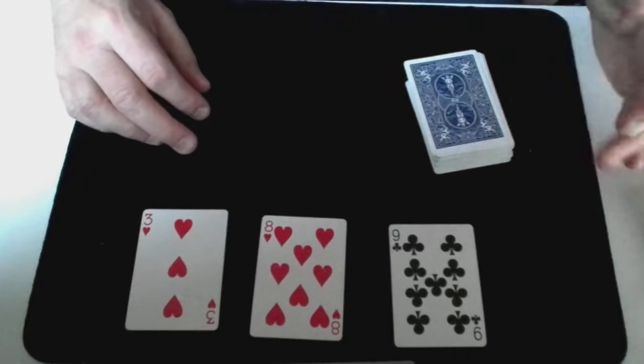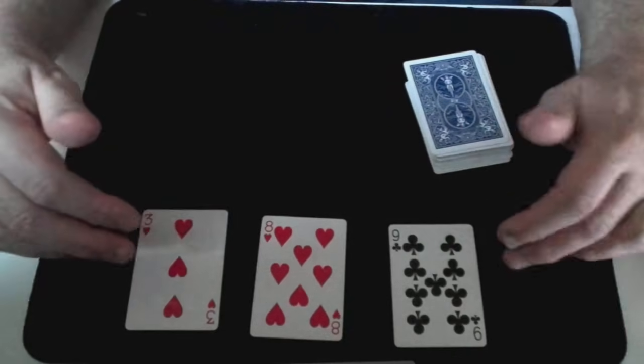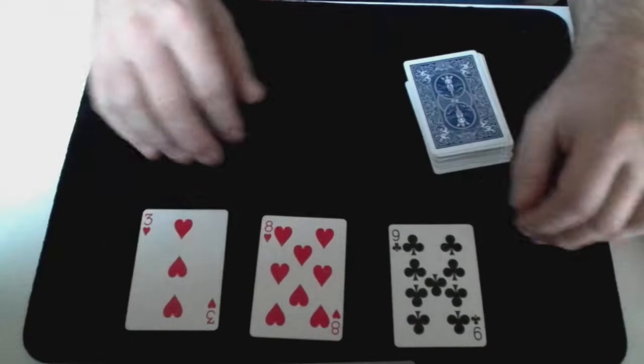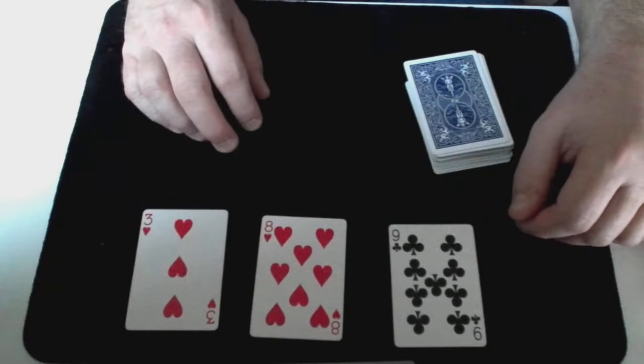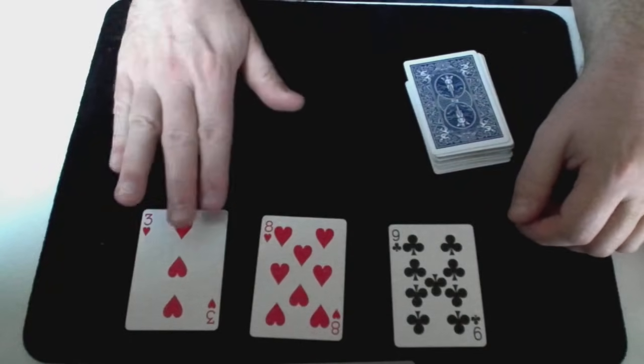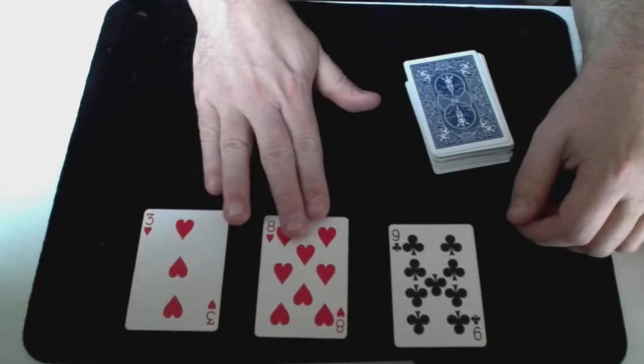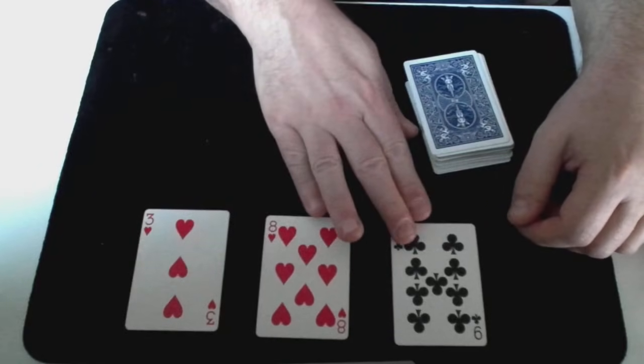You know, even though all the cards were shuffled and you could have chosen any three cards at random, maybe what we actually need to do is use the value of these cards that you chose. We've got a three, plus eight is eleven, plus nine is twenty.